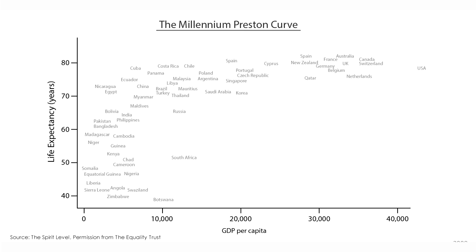This is known as the Preston Curve. Per capita income — the overall income assessed per population unit — actually matters a lot in terms of life expectancy. However, how this income is distributed within the population also matters a great deal.